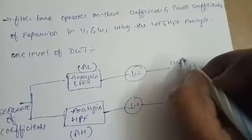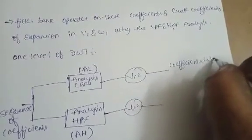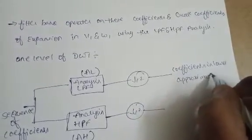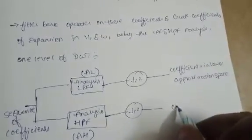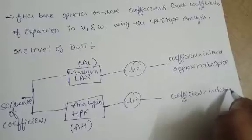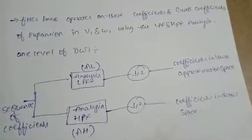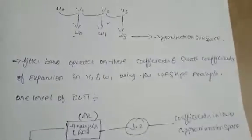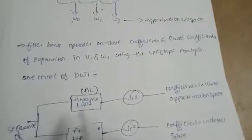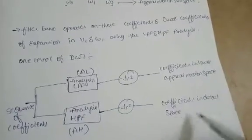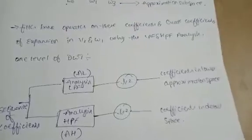After down-sampling, here we will see the coefficients in the lower approximation space, and here we will see the coefficients in the detail space. This completes one level of DWT.